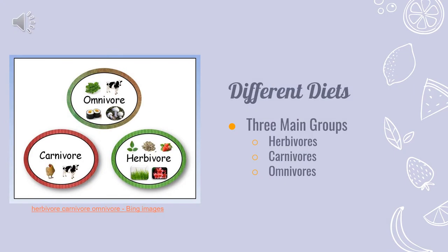Let's talk about the different diets. Although there are many different groups, categories, and subcategories of diets, there are three types that are considered the main ones: the herbivores, carnivores, and omnivores.